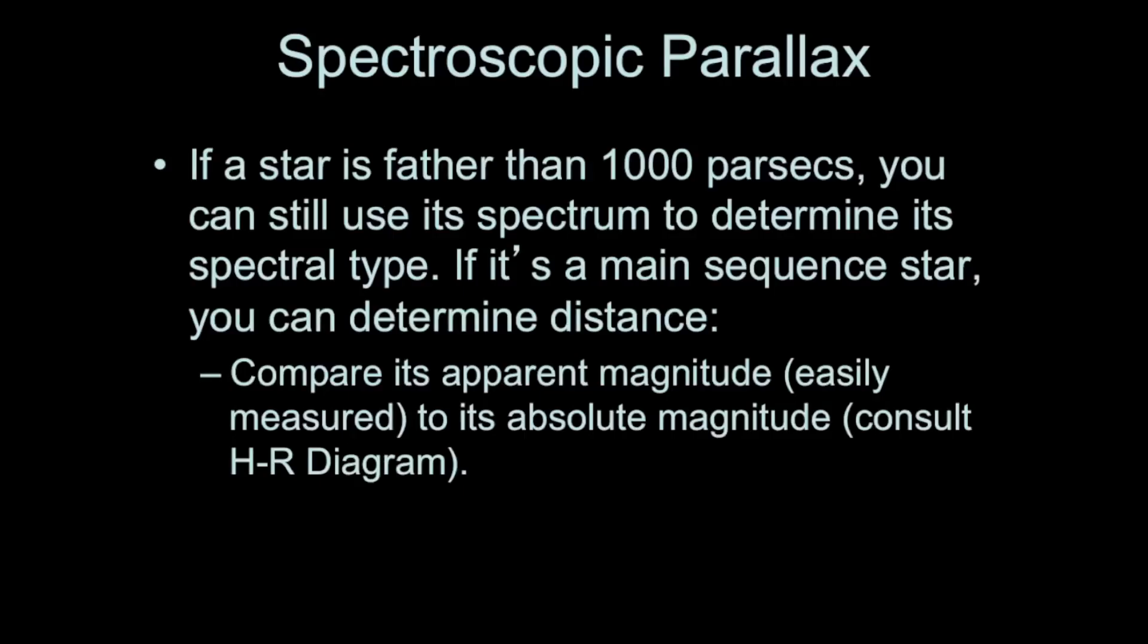If a star is farther away than a thousand parsecs, you'll have to use its spectrum. You'll collect light from the star in your telescope, use its spectrum to determine its spectral type, and if it's a main sequence star, determine what its absolute magnitude is by reading it off of the HR diagram.